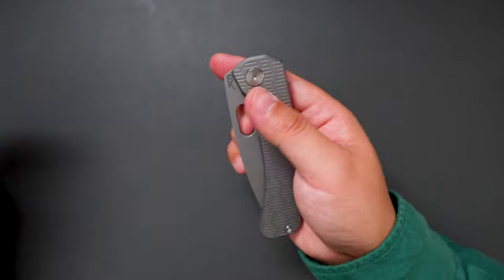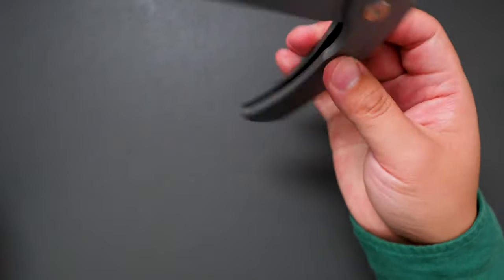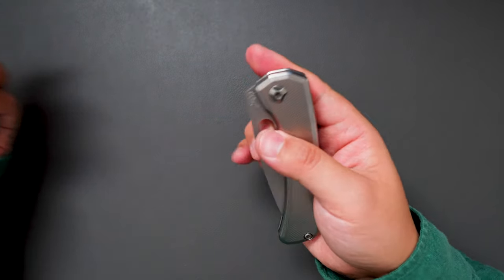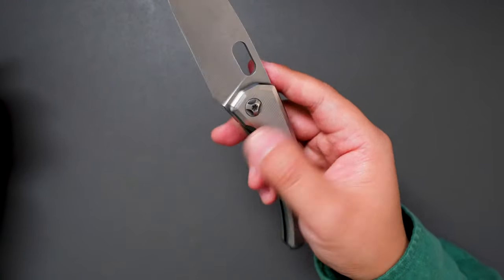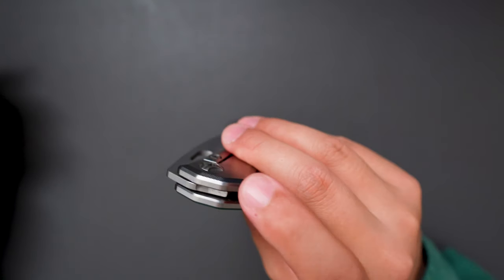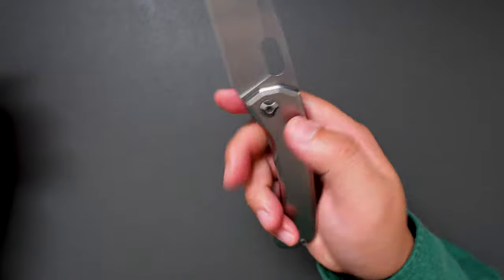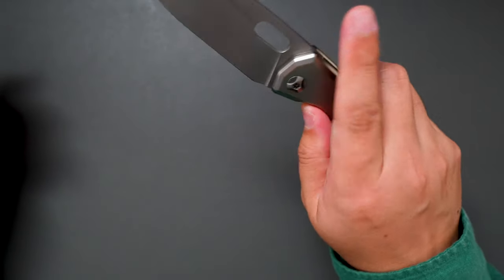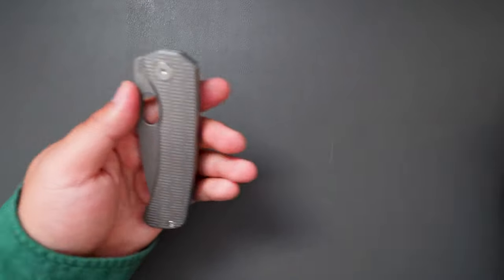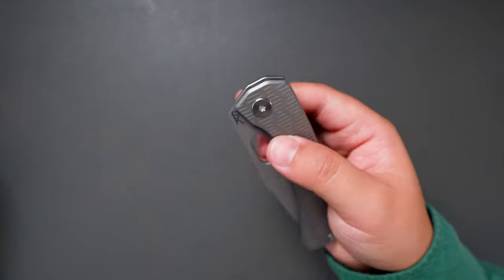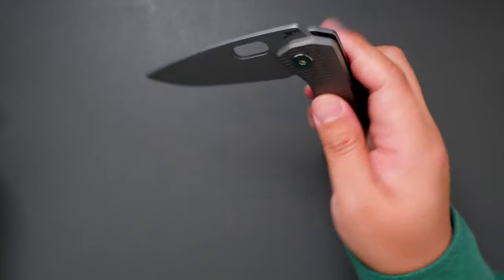I believe this Gen 4 is on bearings only. And the Gen 2 originally was on washers, but I had someone do a bearing mod. So now it's on bearings. Very good action. Drop shutty. And this one right out of the box is drop shutty. Super smooth.